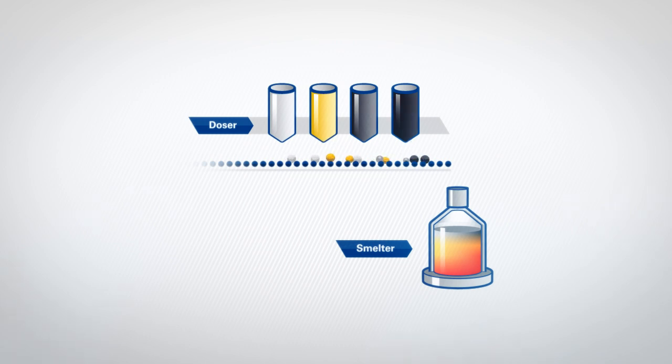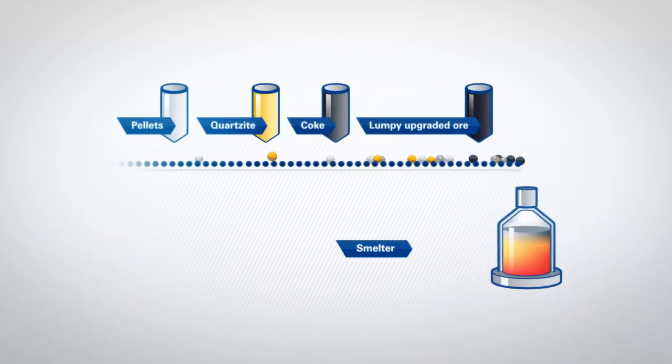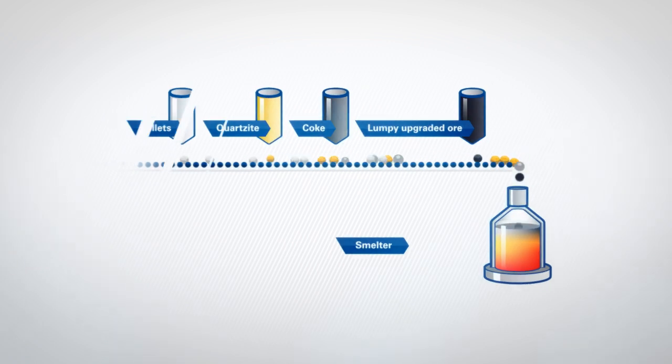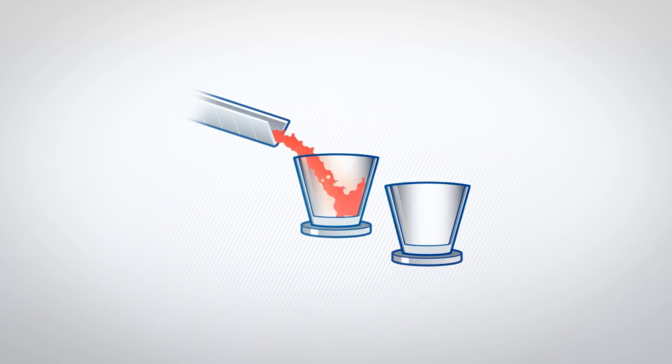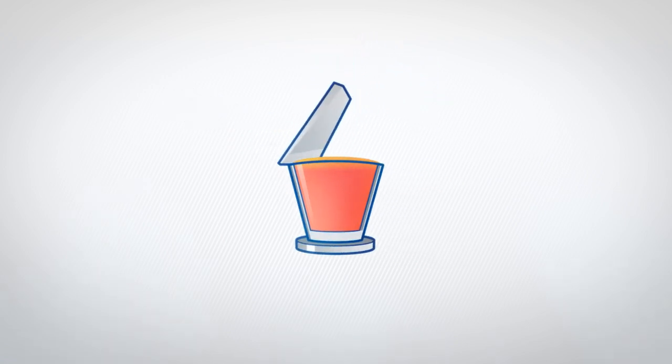A dosing system charges the smelter with chromite pellets, quartzite, coke and lumpy concentrate. After smelting in the furnace, the ferrochrome smelt is tapped into a ladle and the slag byproduct removed. CO gas produced by the smelting process is recycled for use in the ferrochrome works and the rolling mills.